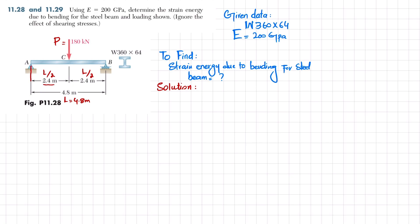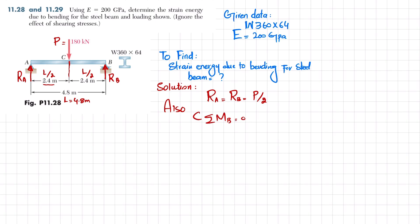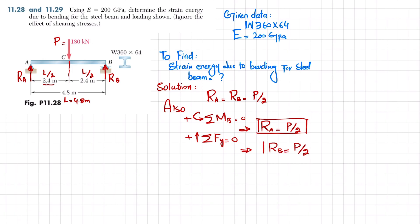The first step is to find the reaction forces at points A and B. Removing the supports, we have reaction force R_A at A and R_B at B. Since the load acts at the midpoint of the beam, R_A equals R_B. Taking the sum of all moments about point B equal to zero, with counterclockwise positive, gives R_A equal to P/2. From equilibrium of forces in the y-direction, R_B is also equal to P/2.